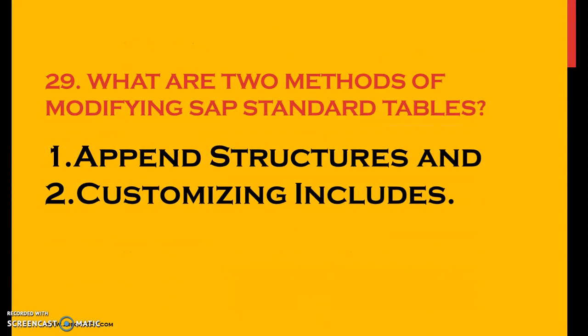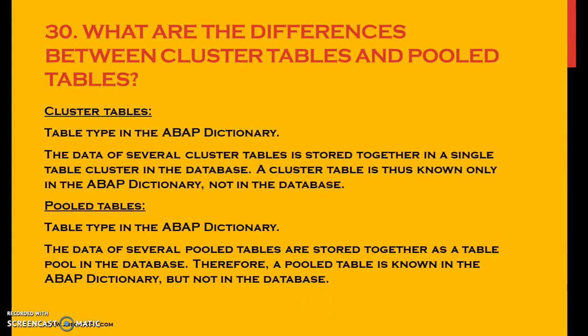So what are the two methods of modifying SAP standard tables? Either we can modify or add fields to the existing standard table using append structures or customizing includes. What are the differences between cluster tables and pool tables? For cluster tables, the data of several cluster tables is stored together in a single table cluster in the database — a cluster table is known only in the ABAP dictionary, not in the database. For pool tables, the data of several pool tables are stored together as a table pool in the database — a pool table is known in the ABAP dictionary but not in the database.